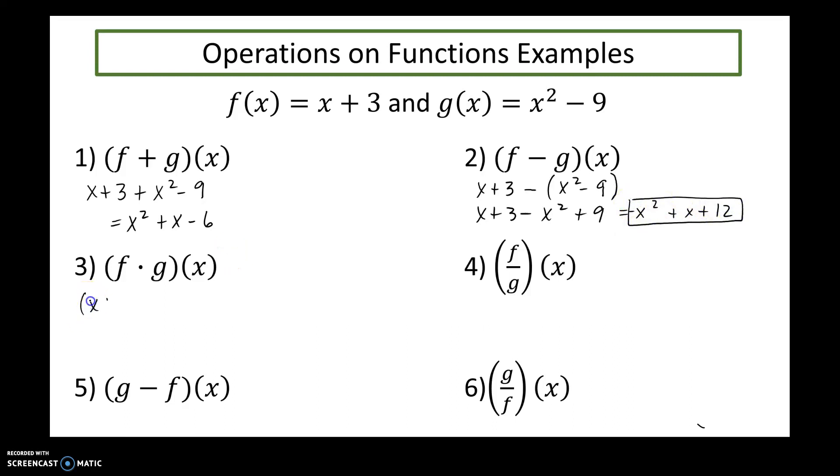f times g, x plus three times x squared minus nine, so doing some multiplying, x cubed minus nine x plus three x squared minus 27. So just rearranging that polynomial to be in standard form, recall standard form is my exponents decreasing in order.